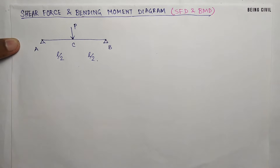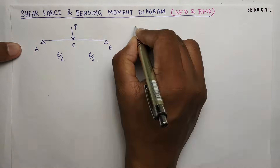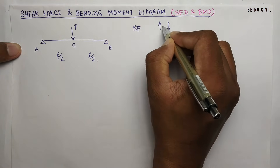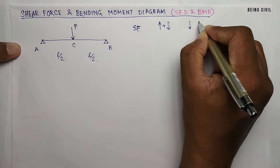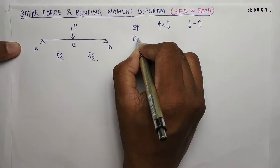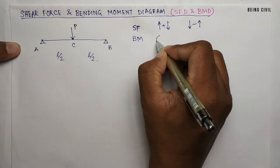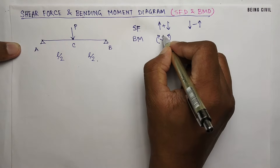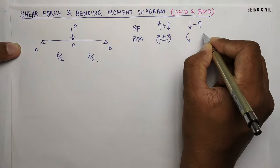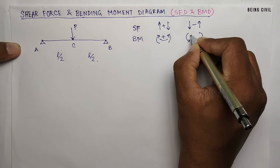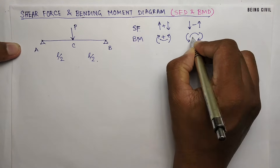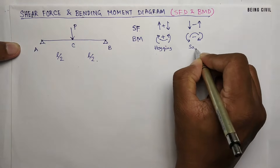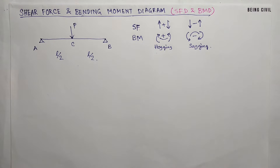First you have to know the sign convention for shear force and bending moment. For the shear force at any section of a beam, if the force is left up and right down it will be positive, and if it is left down and right up it will be negative. For the bending moment, if the beam bends like this it is a hogging bending moment and it is positive. For a sagging bending moment the beam bends the other way and the bending moment is negative. So this is hogging and this is sagging — that is the basic sign convention for shear force and bending moment.